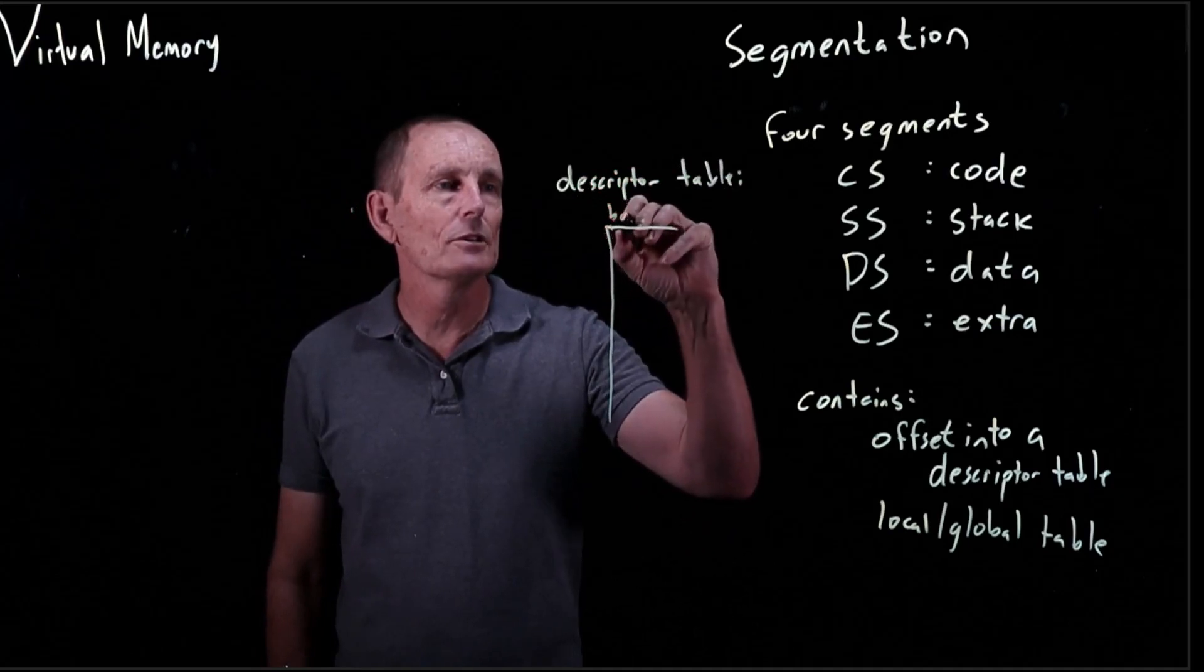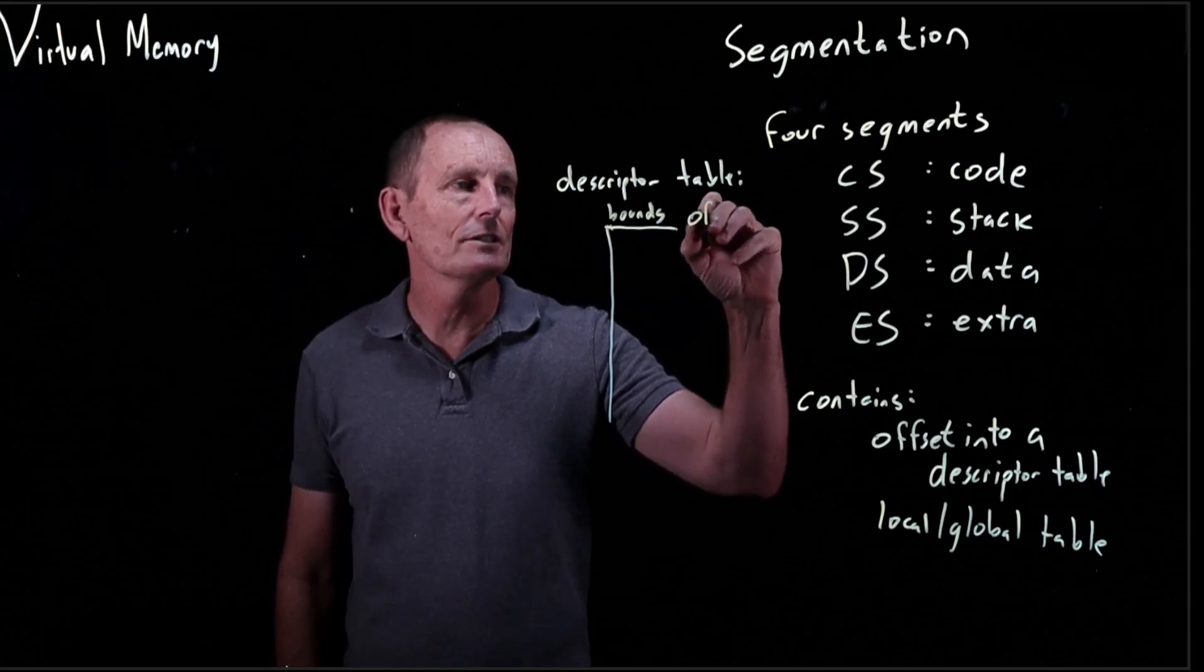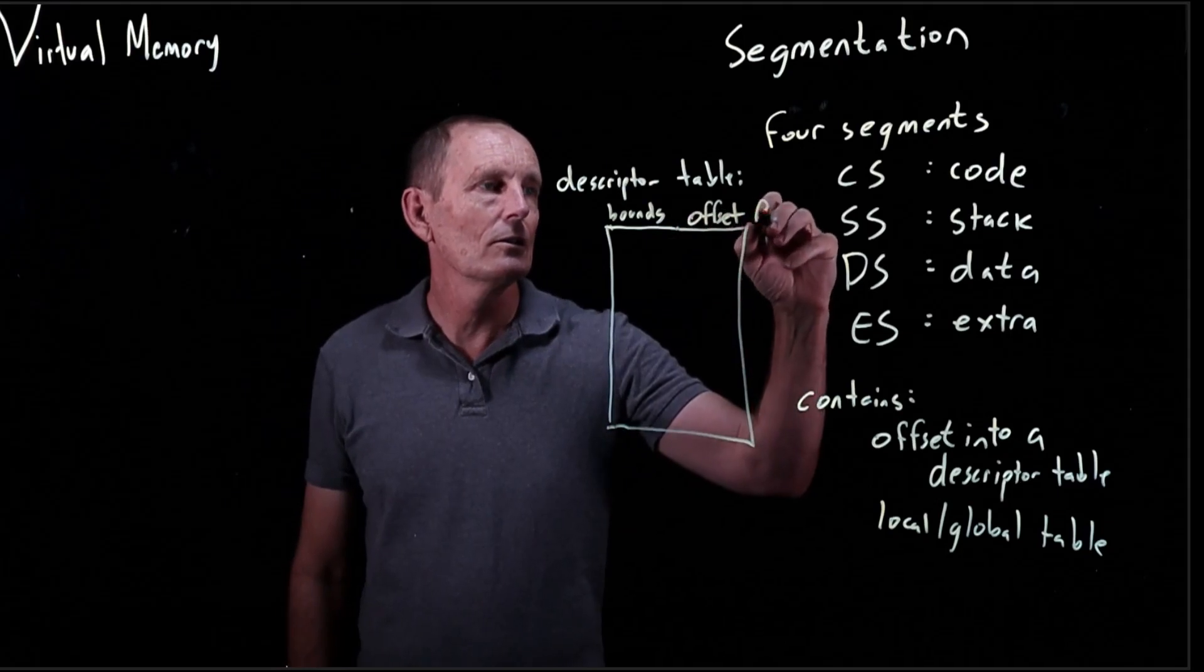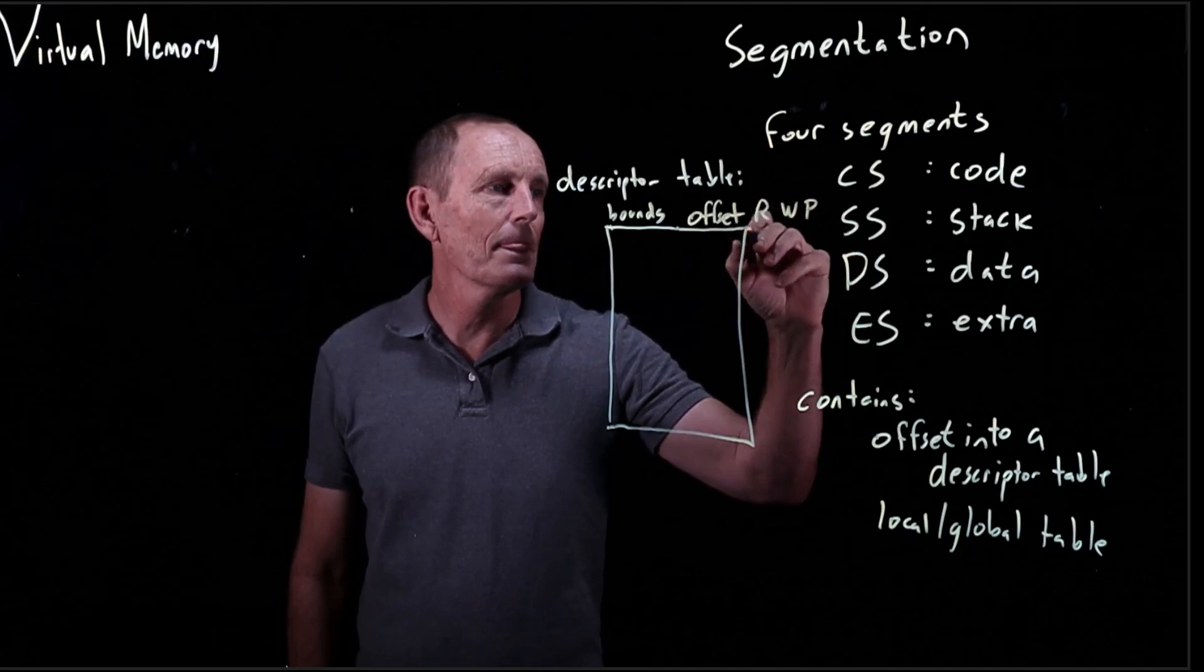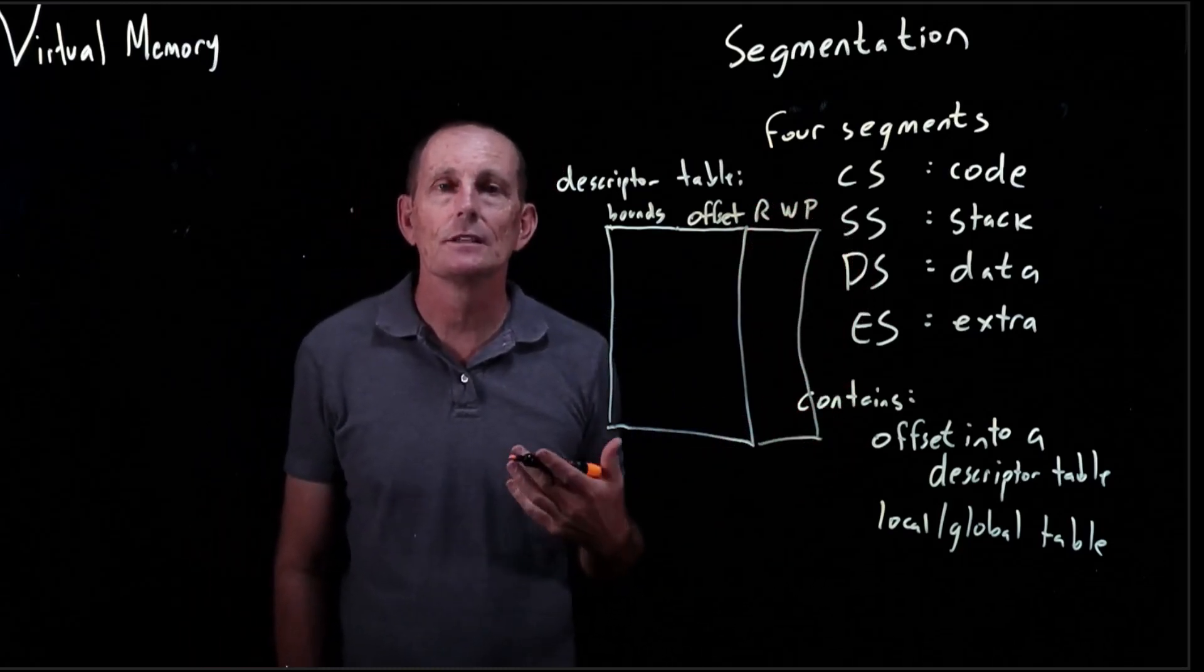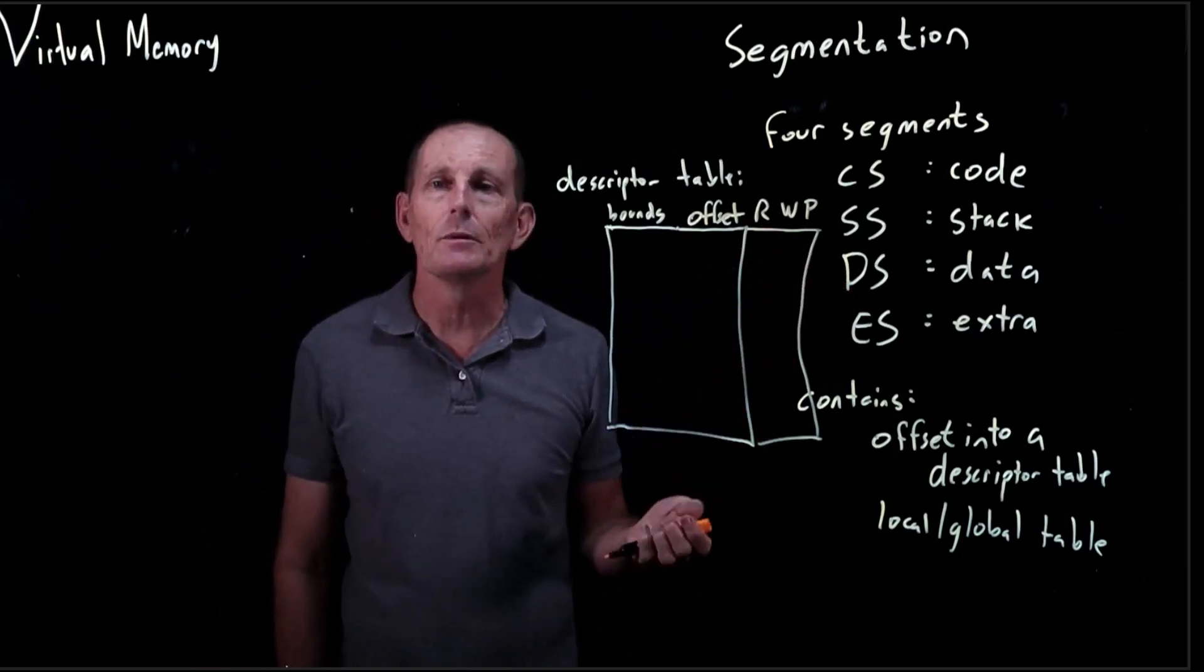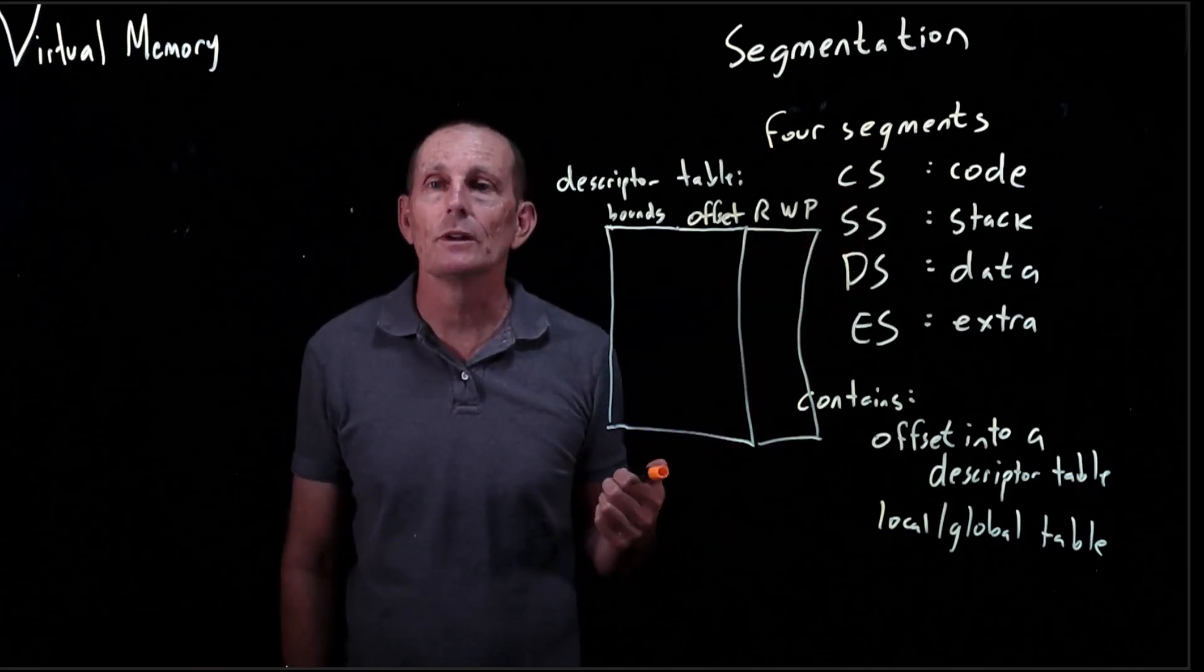...consists of bounds or limit, offset, read, write, and present. So the read, write, and present tell us whether, for instance, a particular segment is writable. For code segments, you'd often not make those writable, right? You don't want to have self-modifying code.